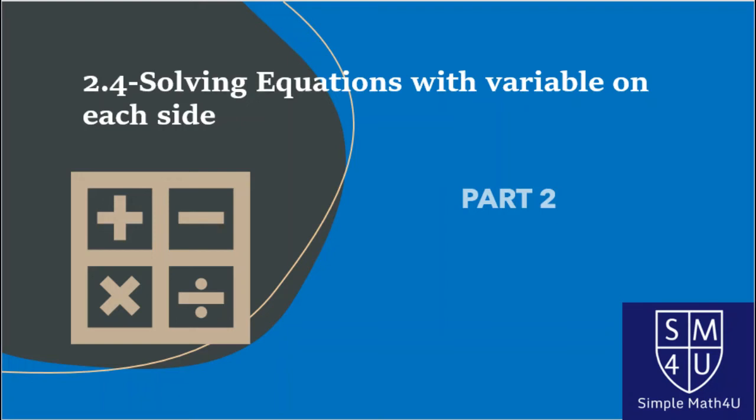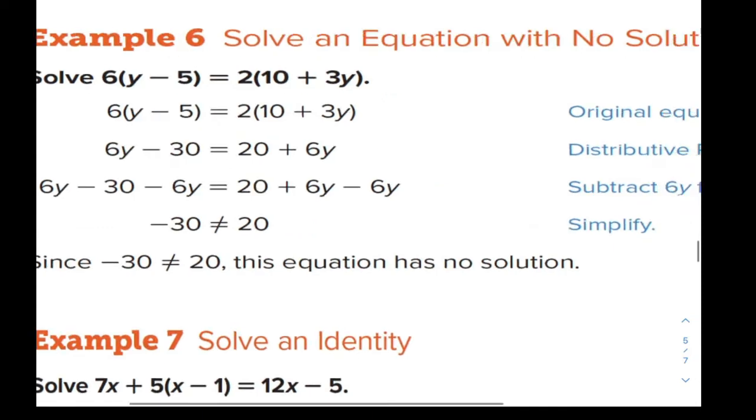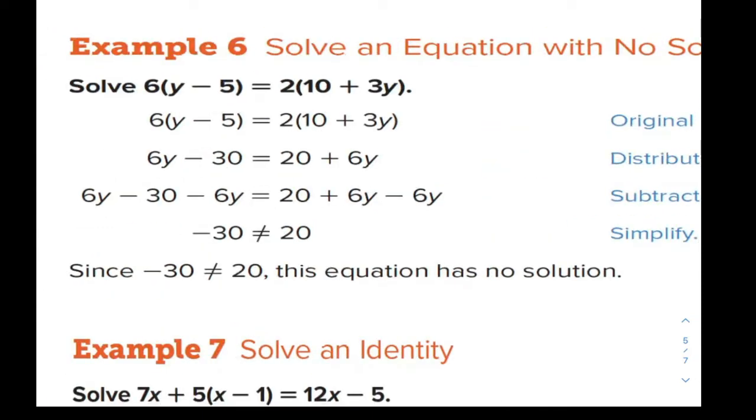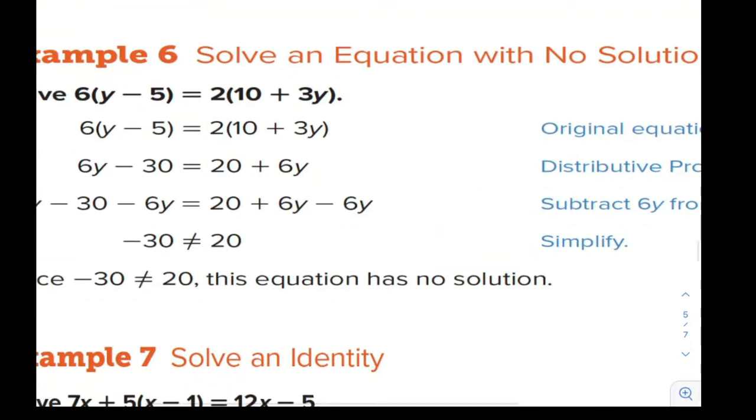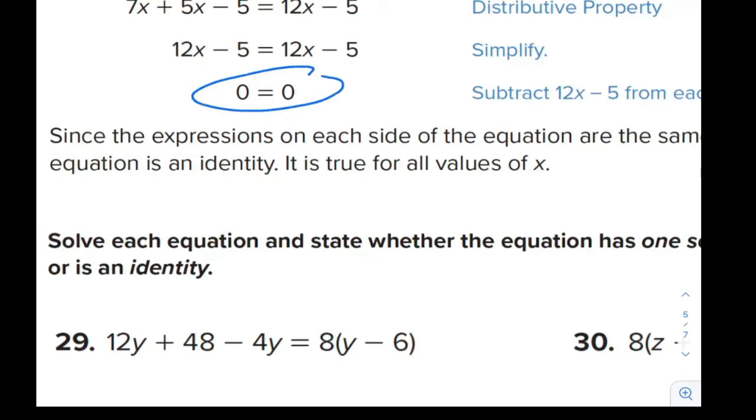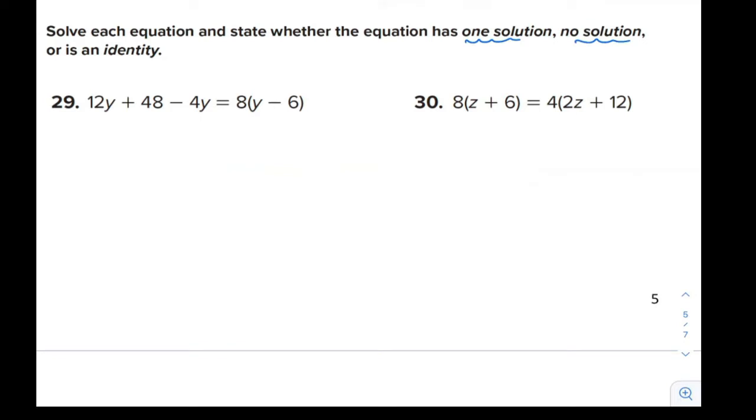Equations with the variable on each side, part two. Let's see what will happen if I solve the equation and I end up with no variables at all. After solving, opening the brackets, everything, there is no variable. It becomes minus 30, not equal to 20, or two numbers that are equal to each other. So how can we deal with such equations? Solve each equation and state whether the equation has one solution, no solution, or an identity. When we have the variable on both sides, we might end up with one of these three cases.